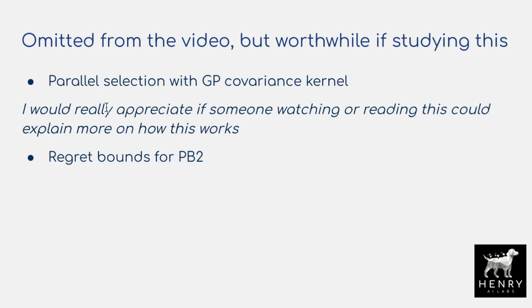The paper also covers regret bounds for this algorithm. I've studied upper confidence bound UCB regret bounds and have an earlier Henry AI Labs reinforcement learning series video covering this, but I wasn't able to quickly understand the regret bounds for PB2 specifically. These are additional ideas in the paper worth checking out if you're interested.